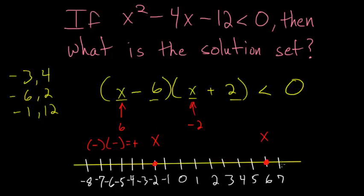Let's look at numbers bigger than 6. If we put in a 7, we'd have 7 minus 6 which is 1, and 7 plus 2 which is 9. So over here we'd have a positive times a positive which gives us a positive. Between the two zeros let's check for 0.